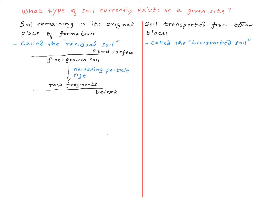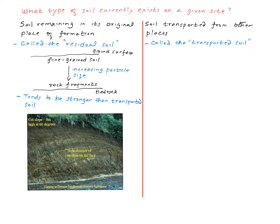Here, the particle size usually increases with depth on a given site. As seen in this picture, a slope on a residual soil is able to stand at an angle of 60 degrees — this is very steep. Generally, the behavior of residual soils is very different from that of transported soils.